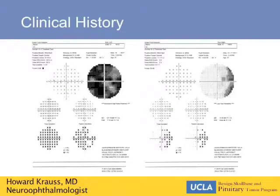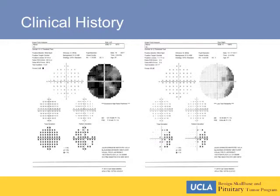Back in the day before there was no such thing as a CT scan or an MRI scan, a neuro-ophthalmologist was useful in actually letting the surgeon know where the lesion might be. But the MRI scan trumps the visual field. Nonetheless, if we were to look at this visual field, at first it seems to be non-localizing.